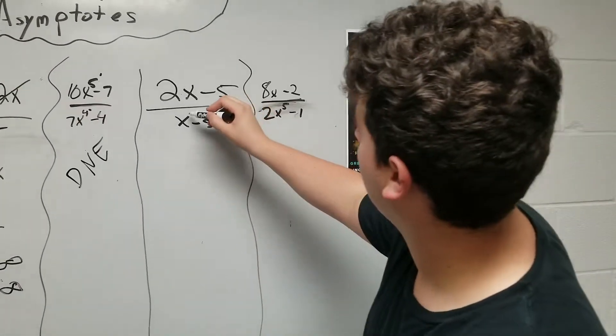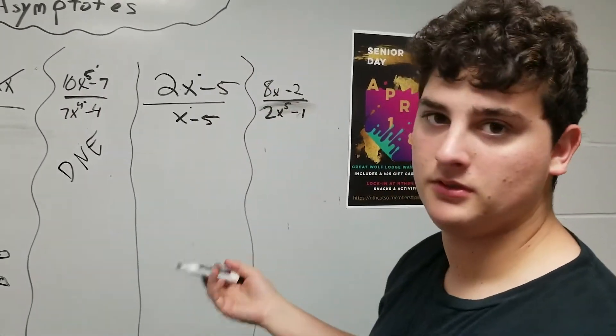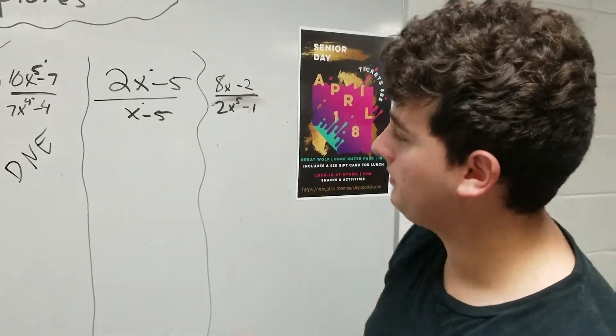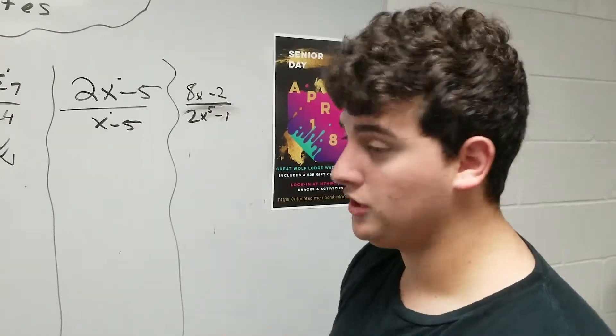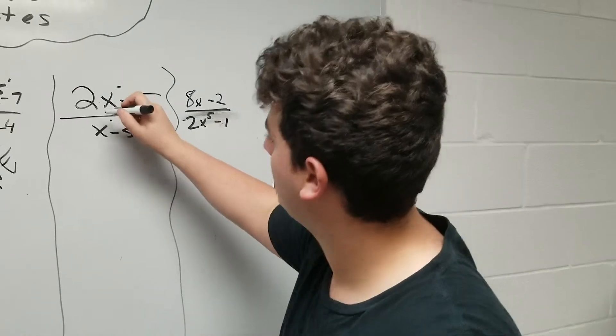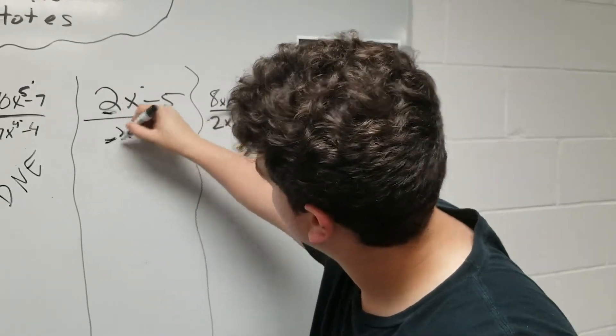I see here that they have the same degree on both the top and the bottom. What you do when it's equal is you just divide the following coefficient in the front.